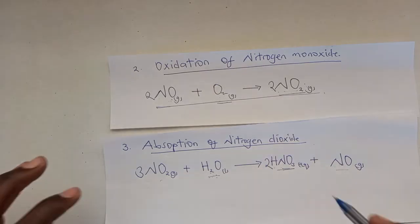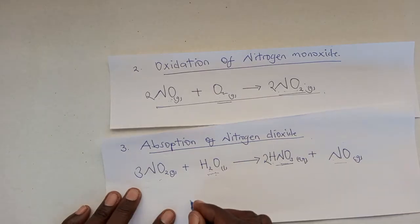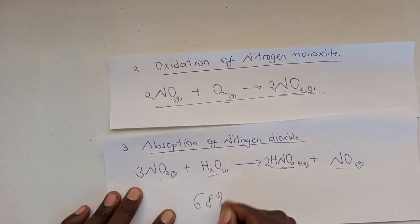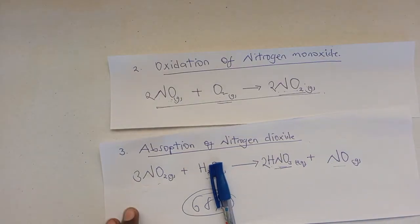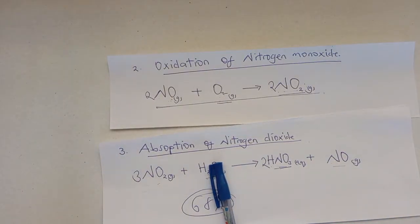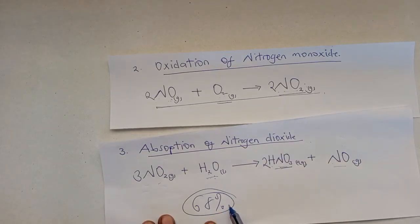This nitric acid that has been produced is usually 68% concentration and it cannot go beyond that by boiling. When nitric acid is being boiled at a certain temperature, the concentration doesn't go beyond 68% because it forms an azeotrope. An azeotrope is basically a constant boiling mixture. This means the solution boils without change in concentration.